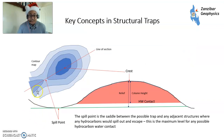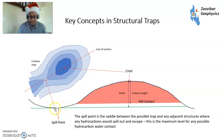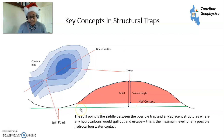Here are a few key concepts within a structural trap. On a contour map, the spill point is the saddle between the possible trap and anything else — hydrocarbons will fill up to there and then eventually spill out. The crest is the highest point of the structure. The relief is the distance between the crest and the spill point, and the column height is the distance between the crest and the hydrocarbon-water contact. Note that the hydrocarbon-water contact is not always at the spill point — this could be because the spill point hasn't been mapped in quite the right place, there hasn't been enough fill, or there's been a little bit of leakage at the top through seal failure.